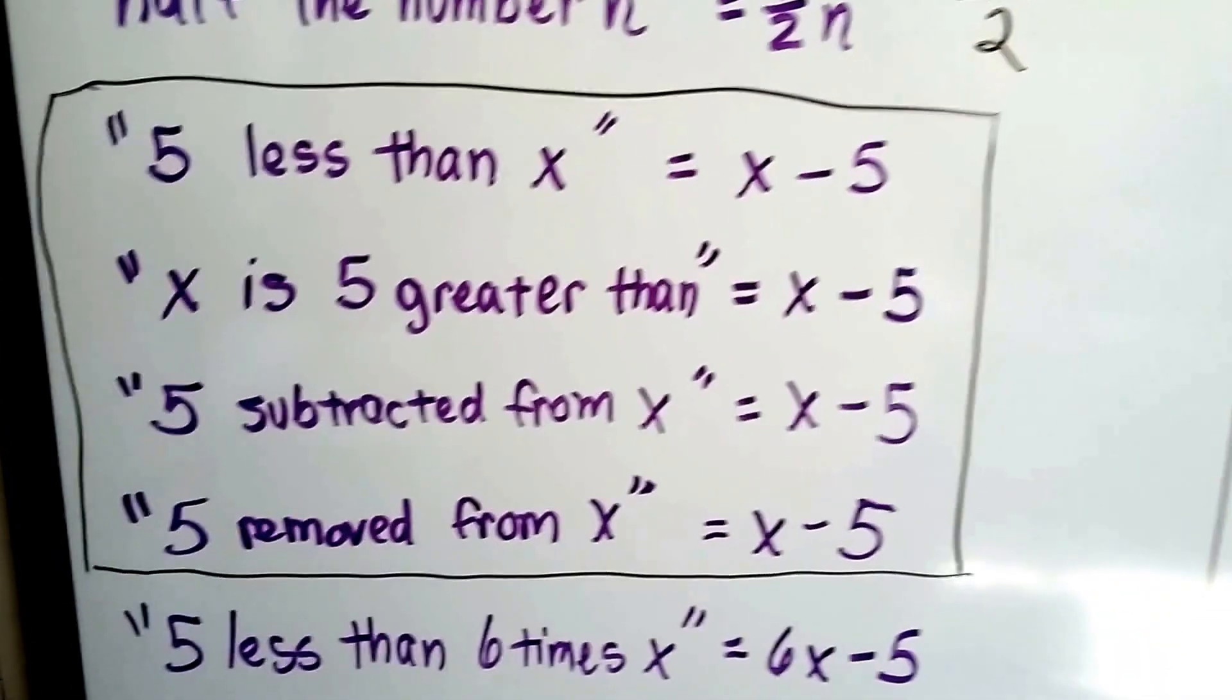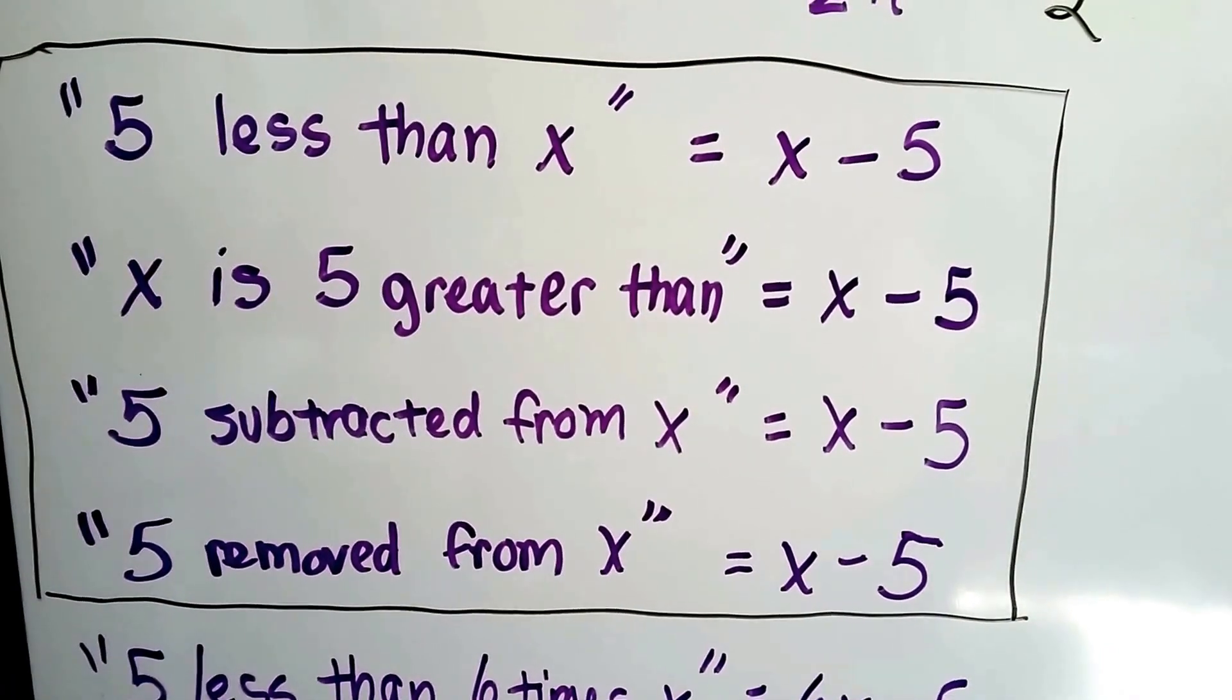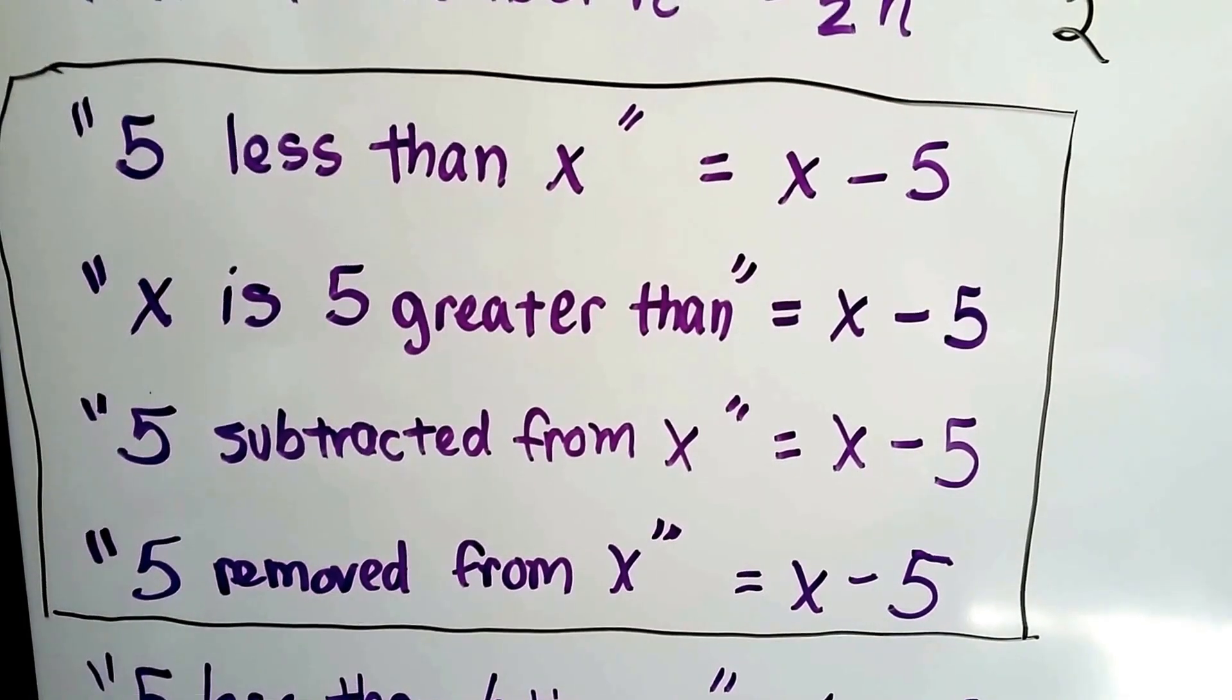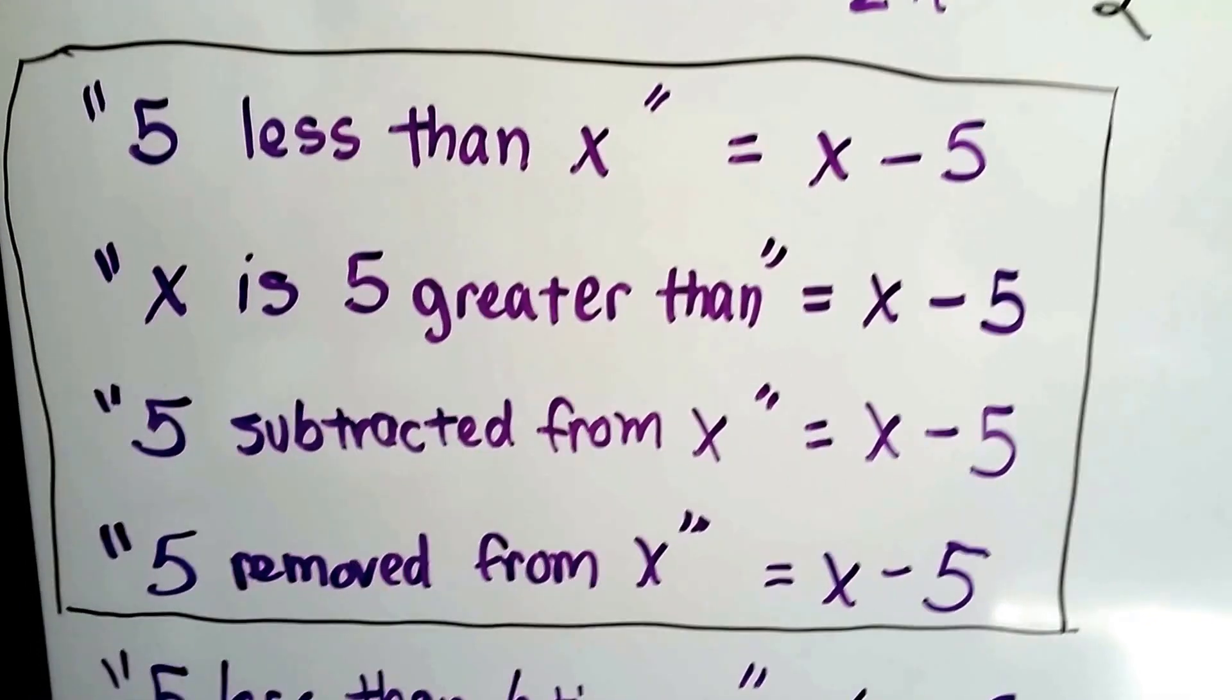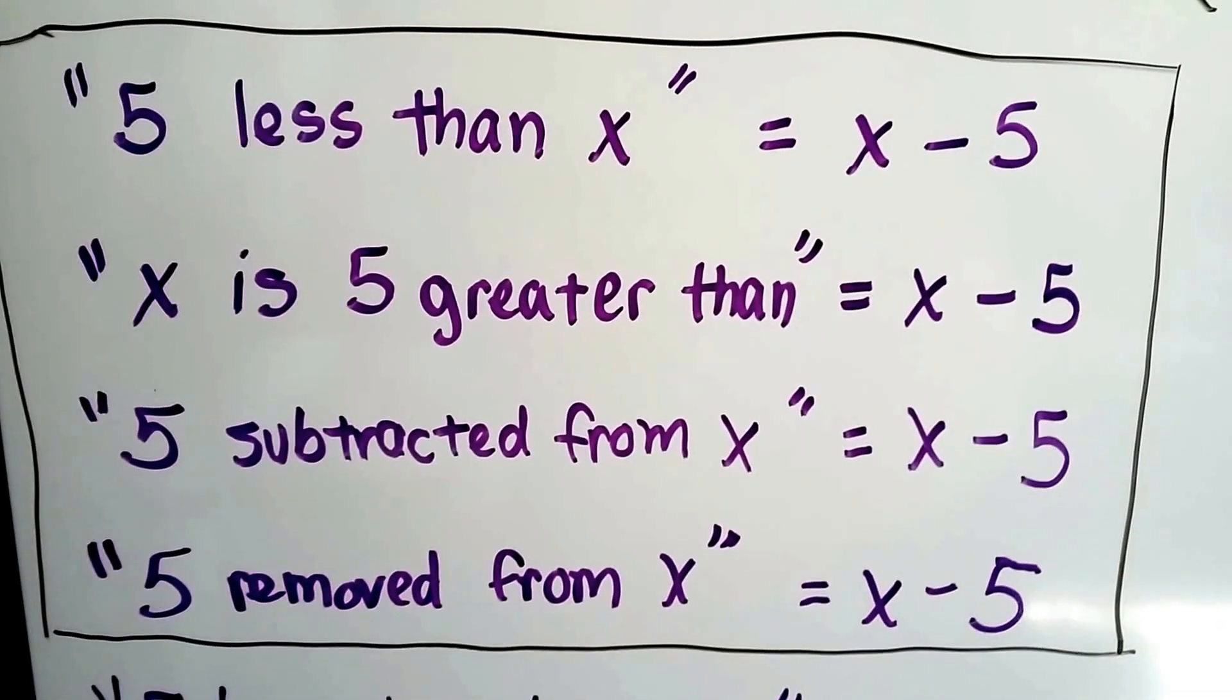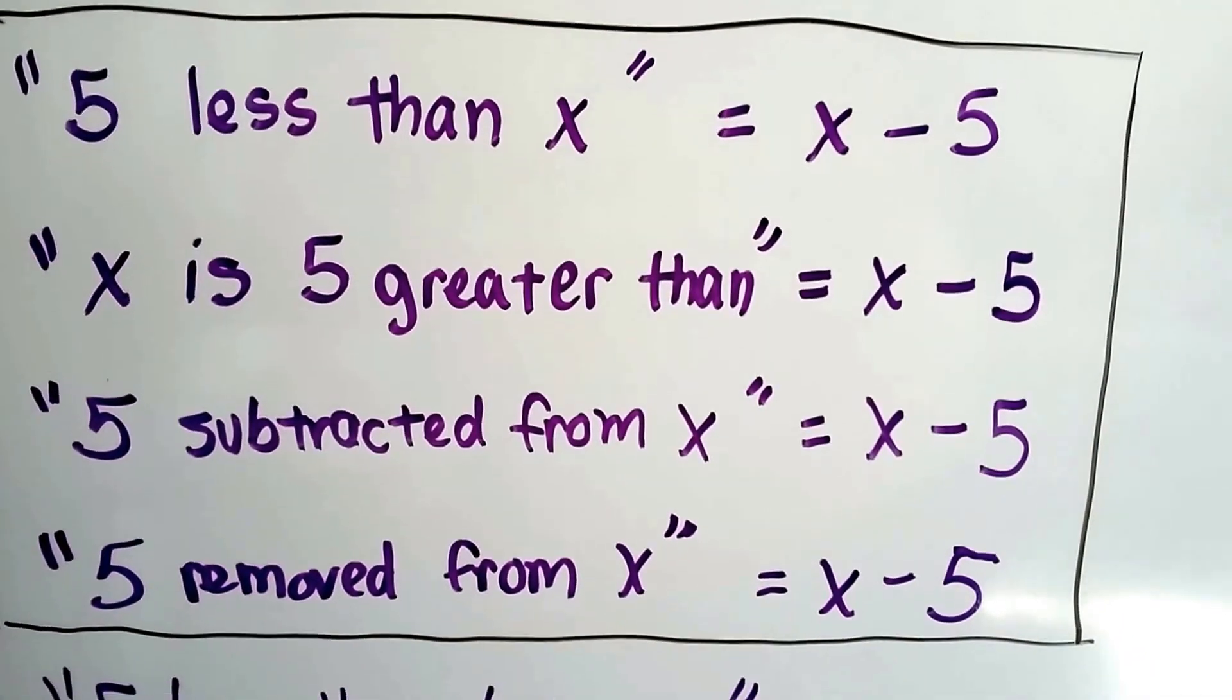Now look at all of these. They all mean the same thing. 5 less than x means x minus 5. x is 5 greater than means x minus 5. 5 subtracted from x means x minus 5. And 5 removed from x means x minus 5. So there might be several different ways of saying the exact same expression.